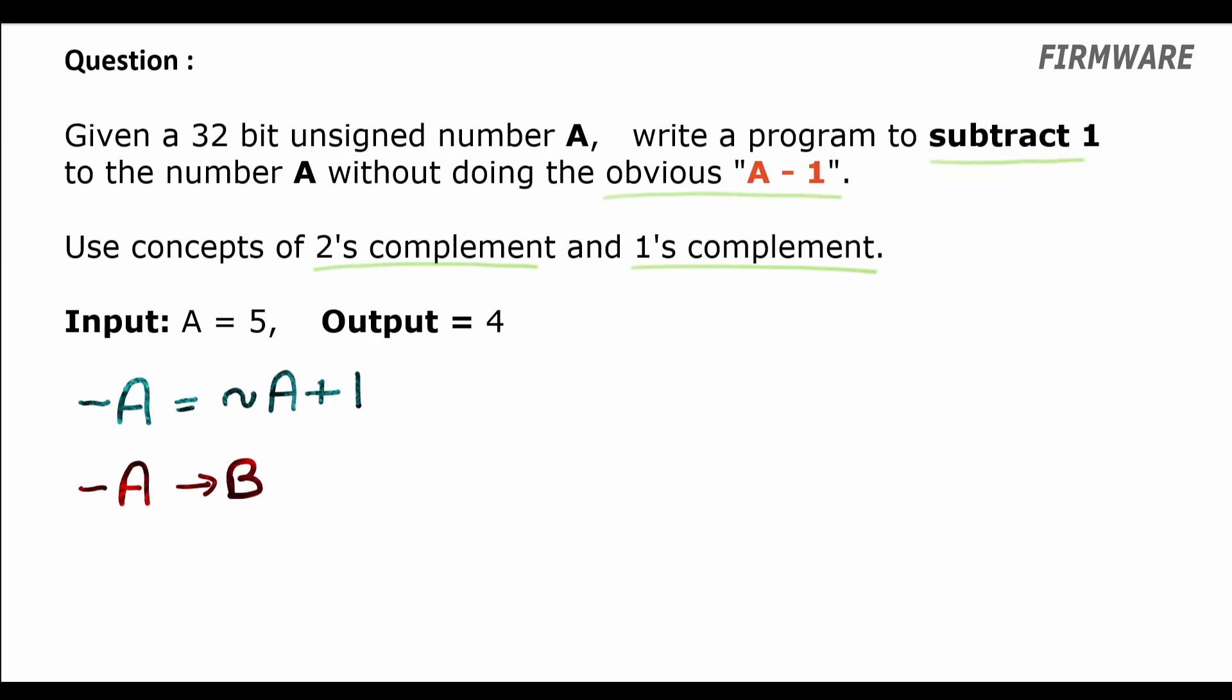Now what's 2's complement of b? 2's complement of b, that is minus b, is equal to inversion of b plus 1. Now from basic algebra, we can bring the 1 to the left hand side. Then we have minus b minus 1 equal to inversion of b.